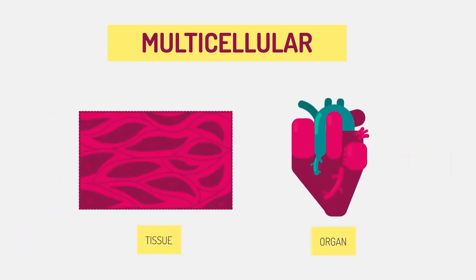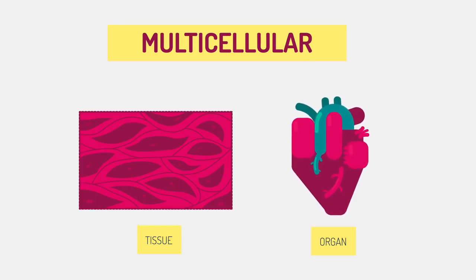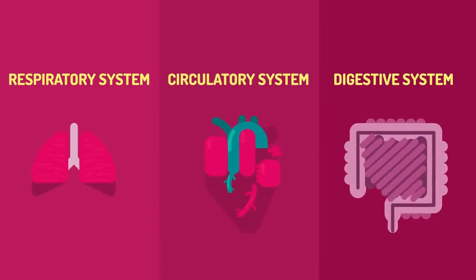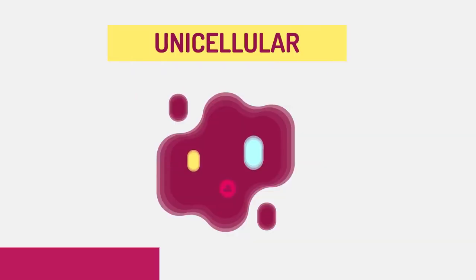Groups of cells then function in the same way to form tissues or organs. These specialized organs carry out our life processes, working together in systems.